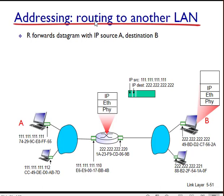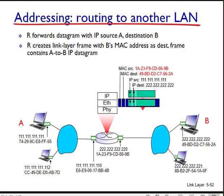This interface then passes the datagram to its adapter, which encapsulates the datagram in a new frame and sends that frame into subnet 2. This time, the destination MAC address of the frame is the MAC address of the ultimate destination. This interface of the router uses ARP to get this destination MAC address, which is on the same subnet 222.222.222.24 as itself.